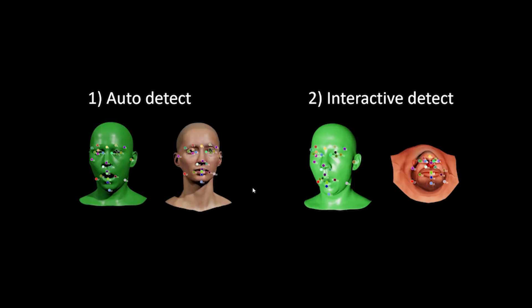Here we provide two detection approaches. The first one is auto detect, which works very well for most face meshes that have similar proportions to the real human face. The second approach is interactive detect, and this approach helps the correspondence detection on cartoon faces that have very different face sizes or proportions compared to a real human face.